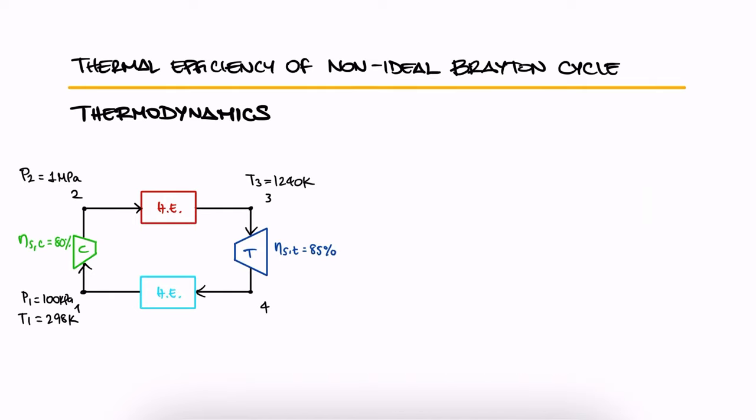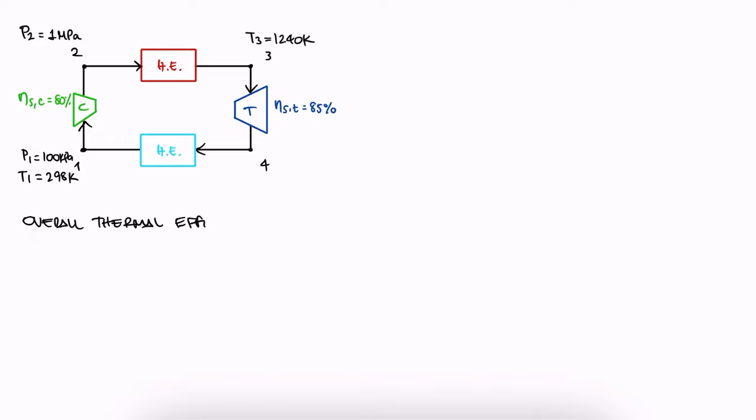Just like with the second example, this example uses the same Brayton cycle we used for the first example. The difference is that this time we're interested in the overall efficiency and not the specifics about the compressor or the turbine. Make sure you've watched the first and second examples first. Since we're using information from those two first examples, this will be a short one.